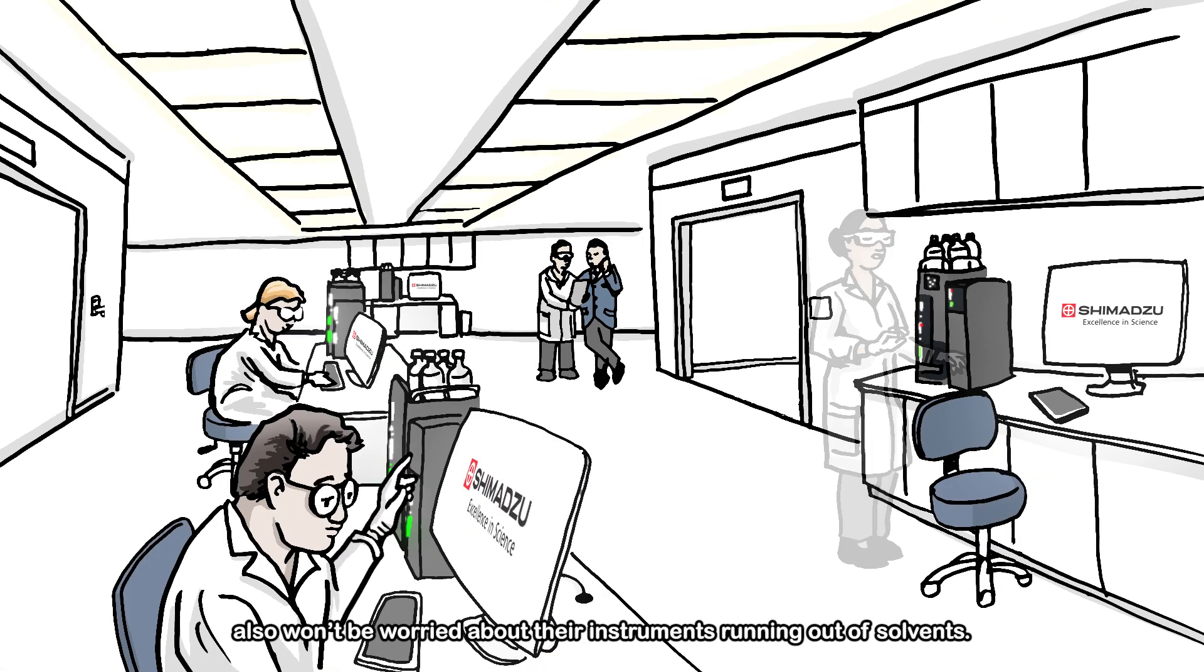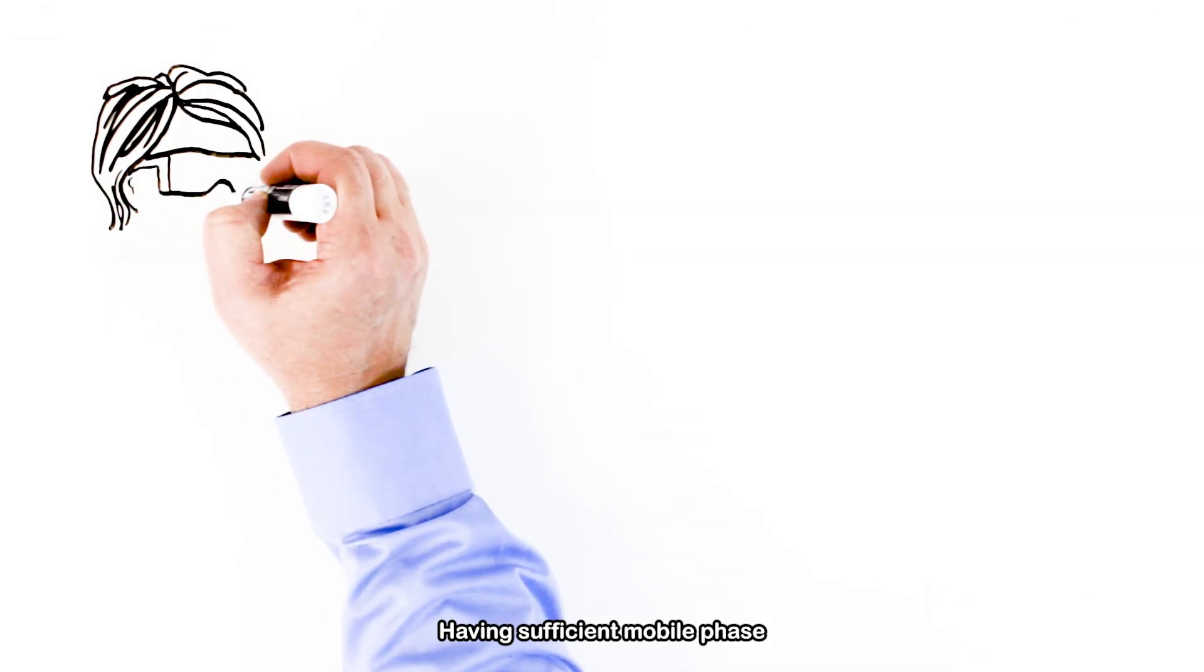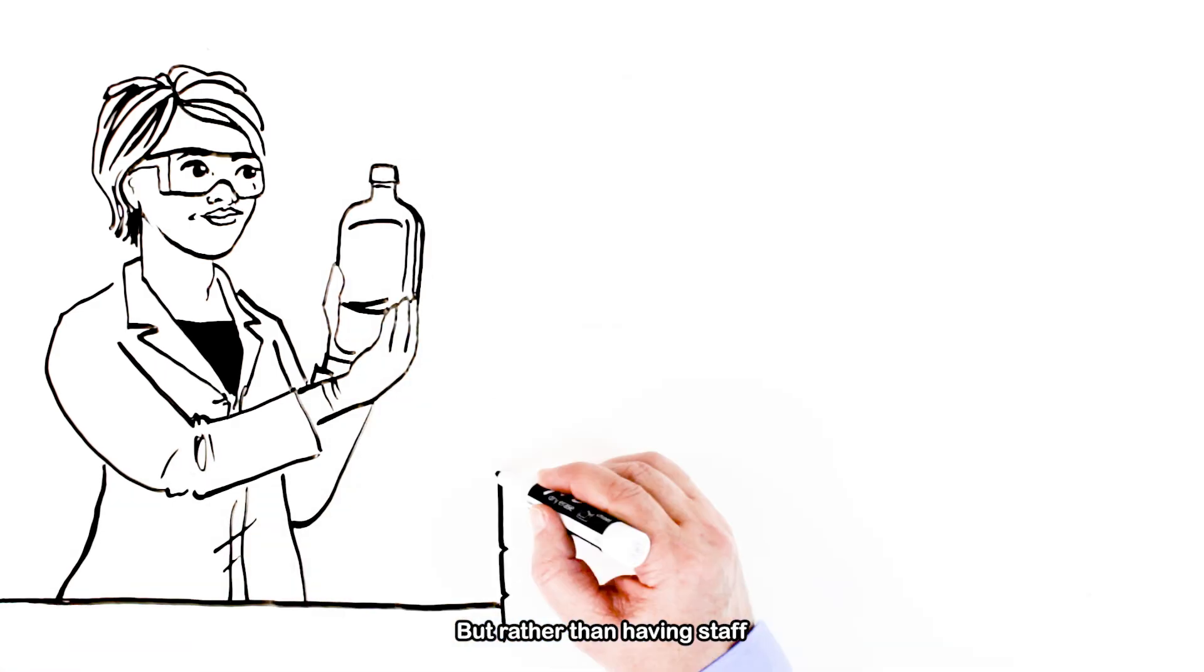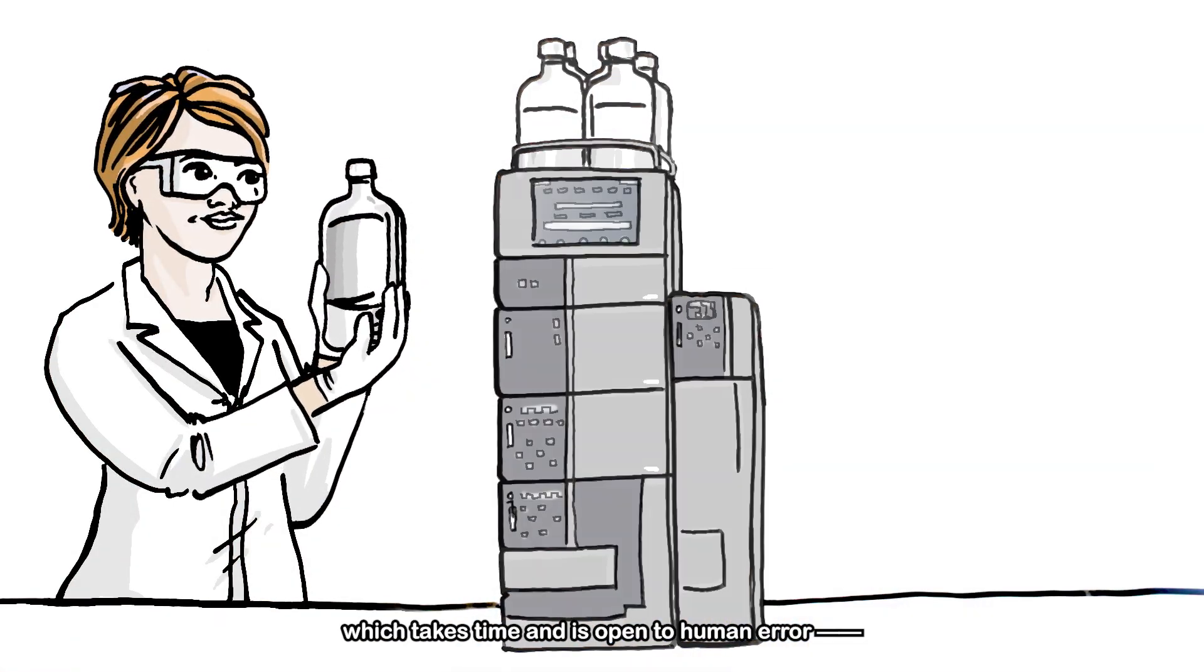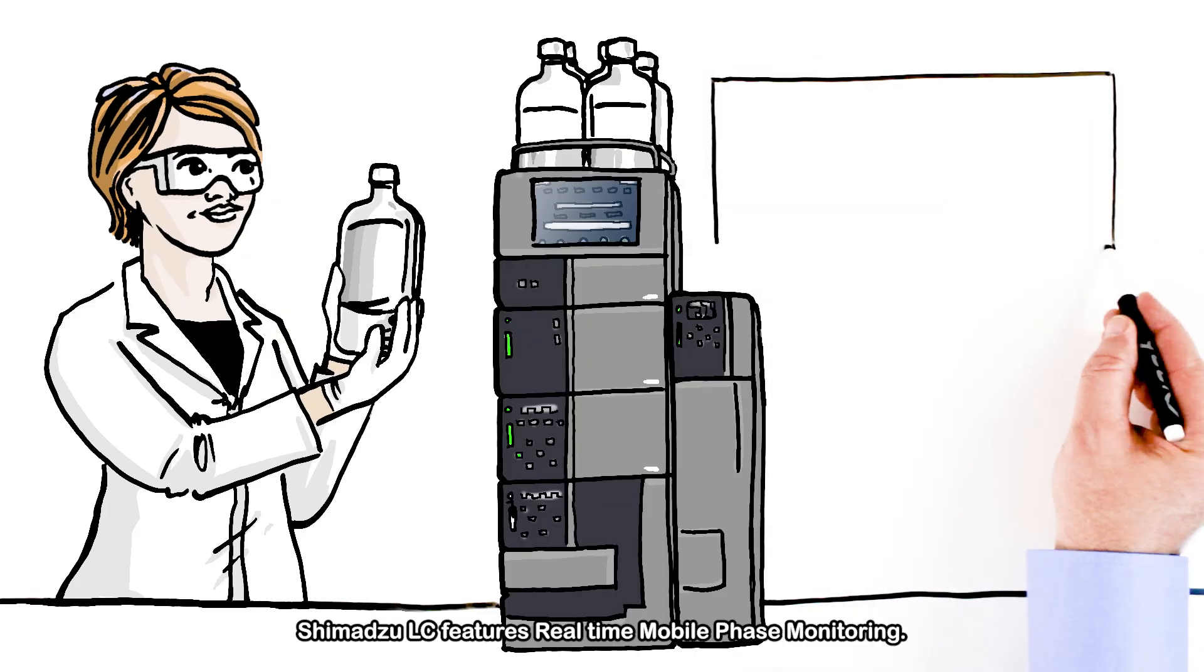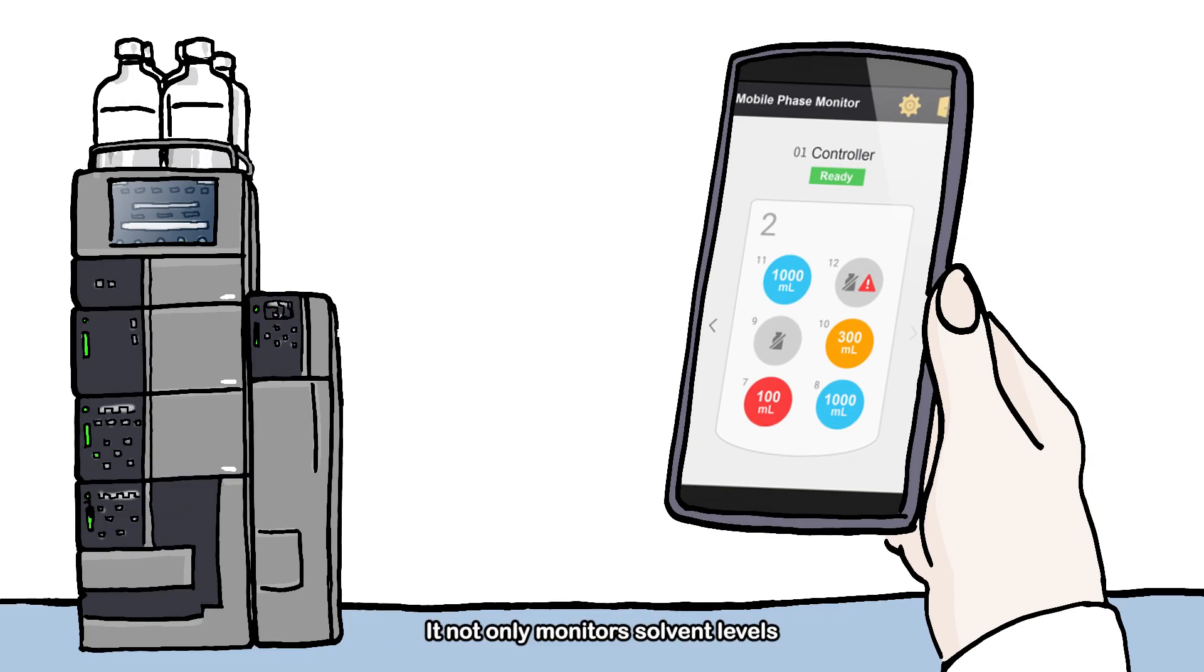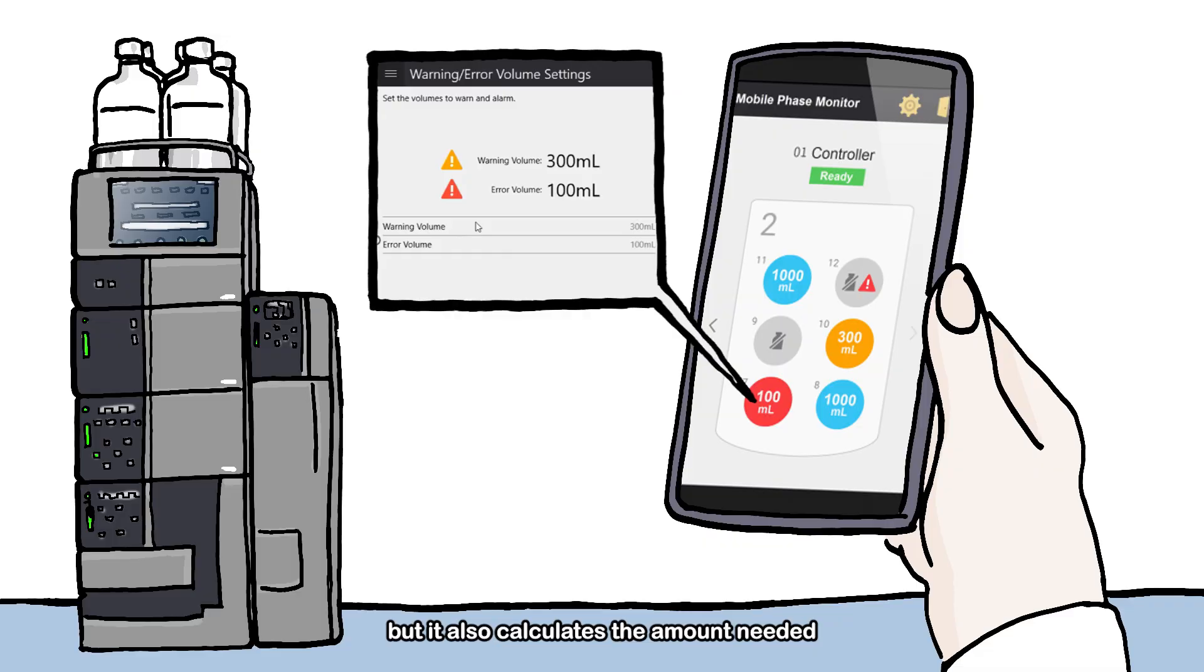As the day moves on, your lab staff also won't be worried about their instruments running out of solvents. Having sufficient mobile phase is critical for keeping experiments running smoothly. But rather than having staff estimate the amount of mobile phase needed for an analysis, which takes time and is open to human error, Shimadzu LC features real-time mobile phase monitoring. It not only monitors solvent levels and sends a notification if there isn't enough mobile phase to complete an analysis, but it also calculates the amount needed and ensures sufficient levels before even starting a run.